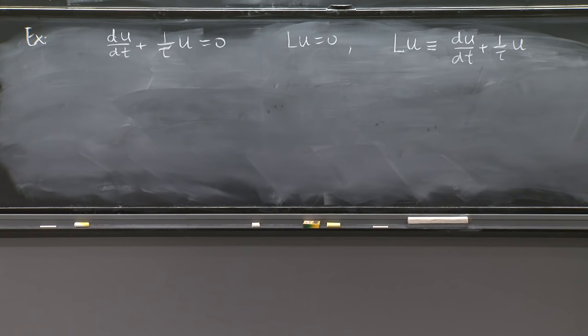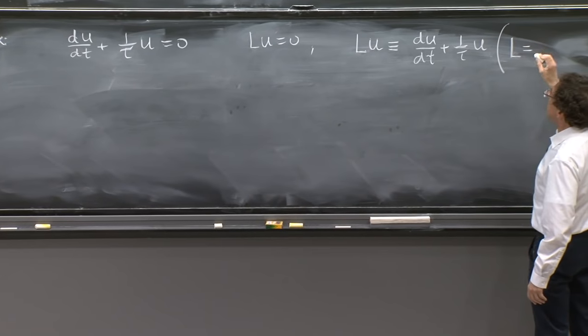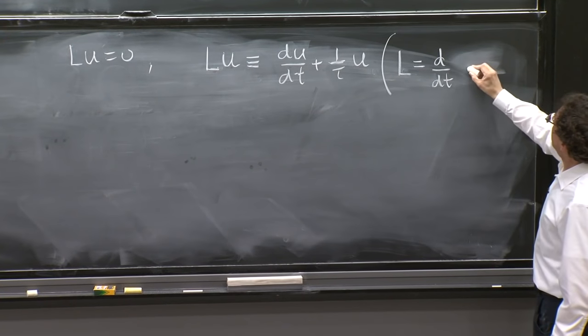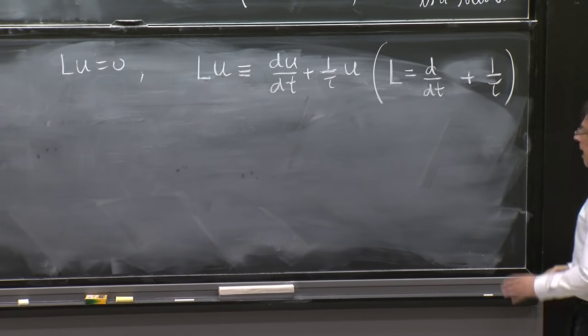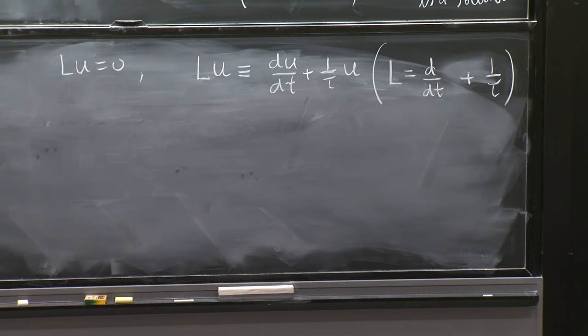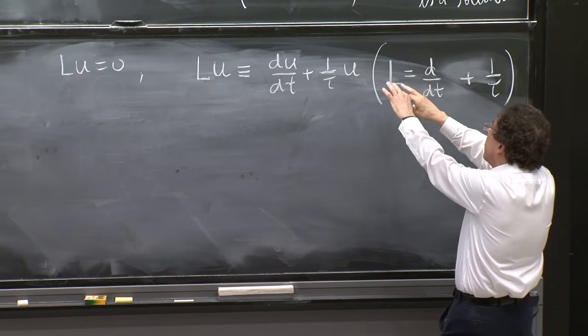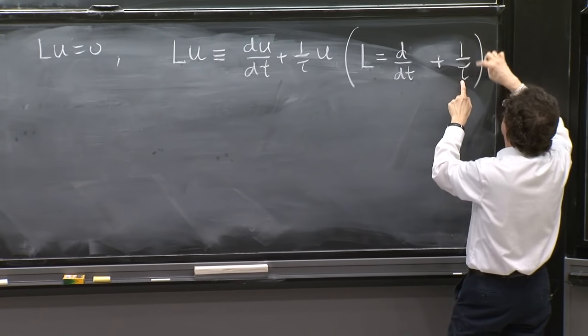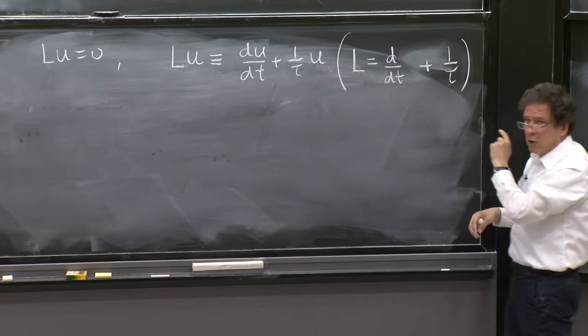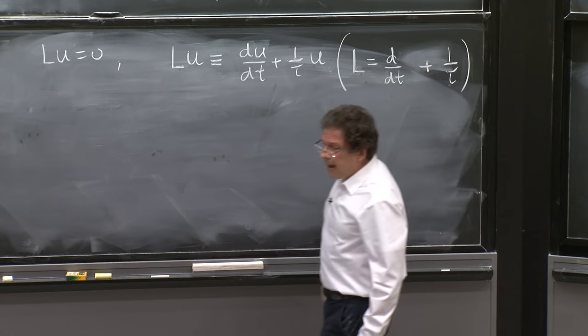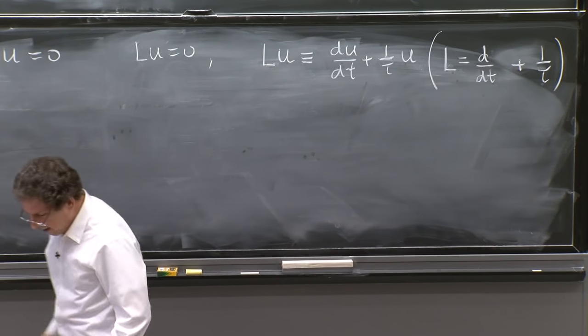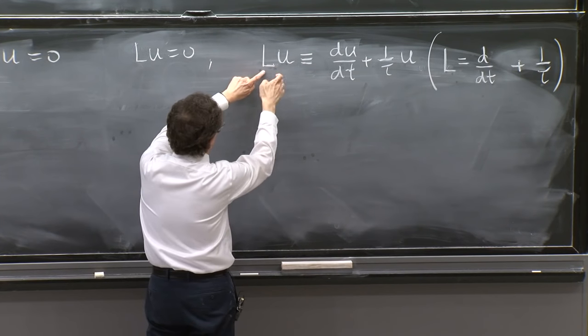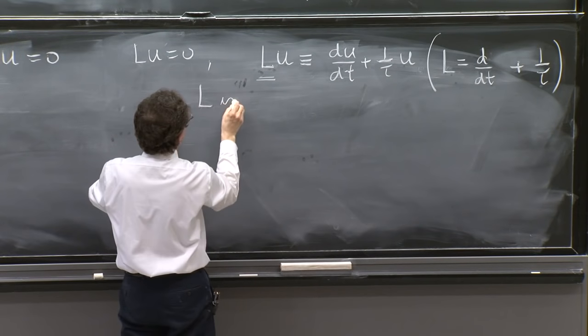The question would be, maybe if somebody would tell you, how do you write L alone? Well, L alone probably we should write it as d/dt without anything here plus 1/τ. That's a way you would write it to try to understand yourself what's going on. And you say, well, then when L acts on the variable u, the first term takes the derivative and the second term, which is a number, just multiplies it. So you could write L as this thing.